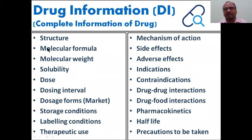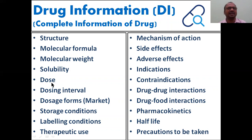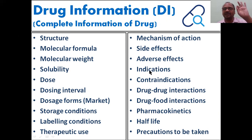First we come to drug information. Each and every drug has a number of properties. For example, take one drug - paracetamol. Complete information of paracetamol includes: structure, molecular formula, molecular weight, solubility, dose, dosing interval, dosage forms available in the market, storage conditions, brand names - paracetamol is a generic name and there are plenty of brand names. Also storage conditions, labeling conditions, therapeutic uses, mechanism of action, side effects, adverse effects, indications, and contraindications - where you cannot write paracetamol in a prescription.